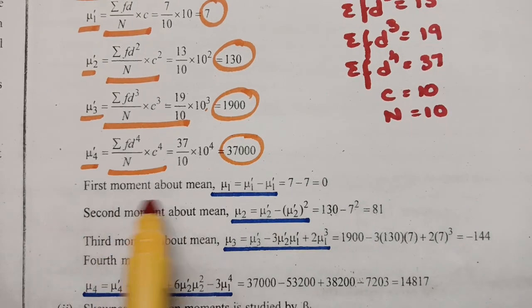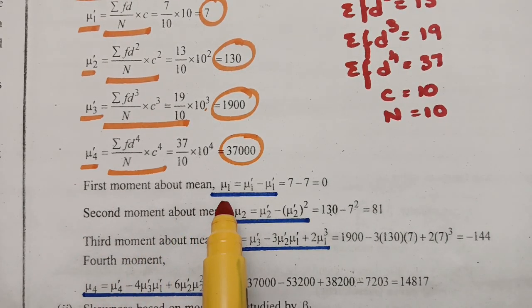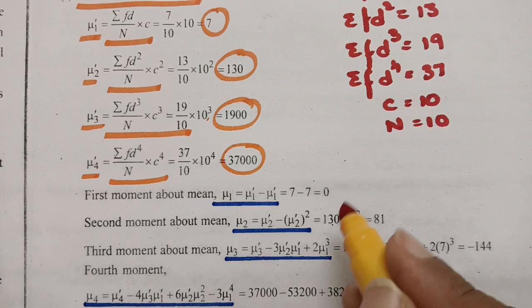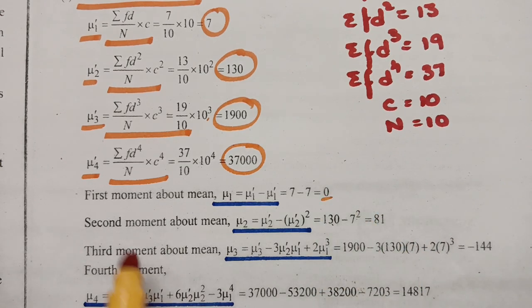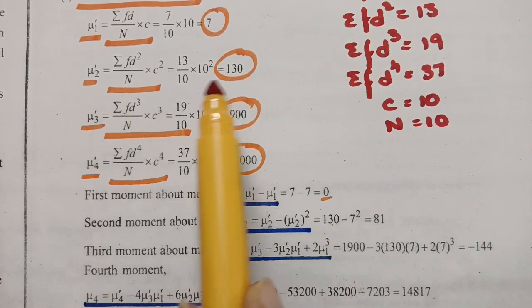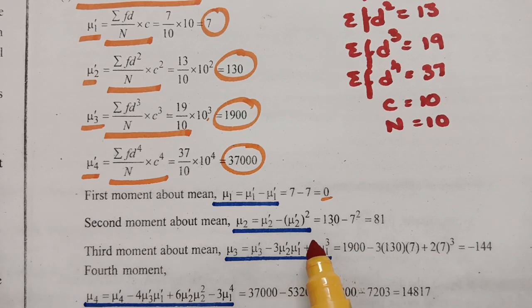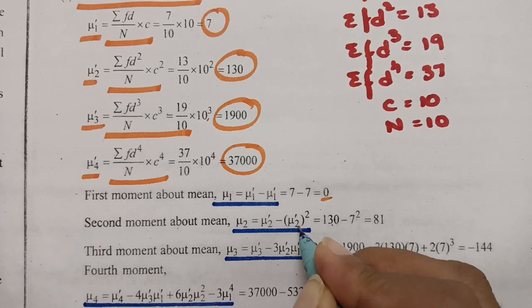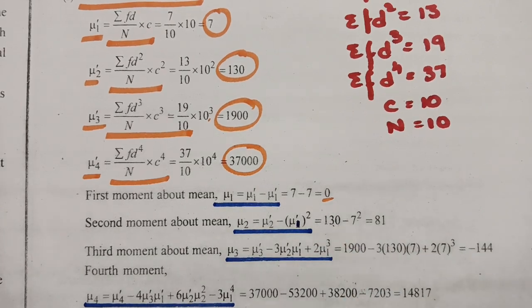Now we calculate the moments about the mean. The first central moment: μ₁ = μ₁' − μ₁' = 7 − 7 = 0. The second central moment: μ₂ = μ₂' − (μ₁')² = 130 − 7² = 130 − 49 = 81.